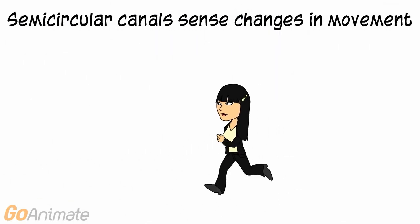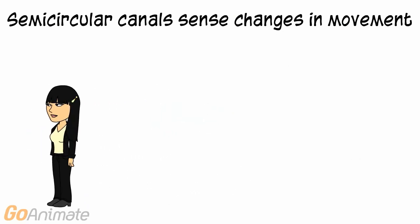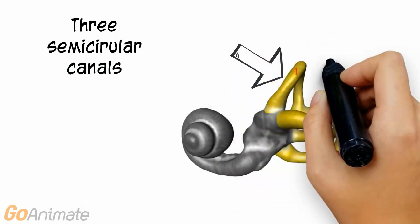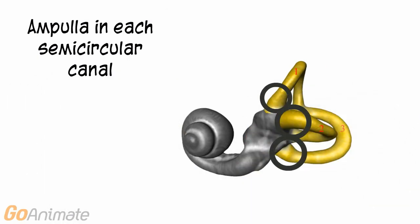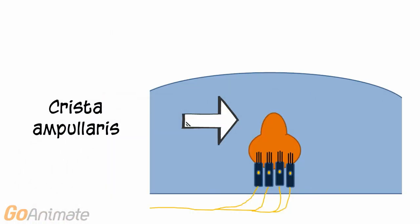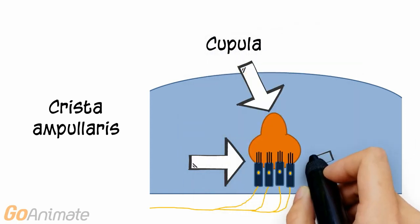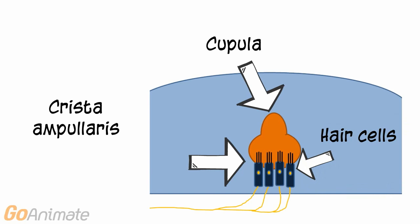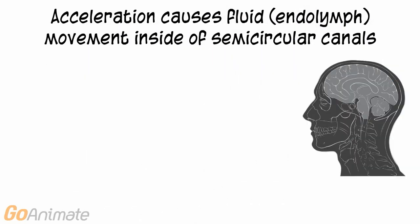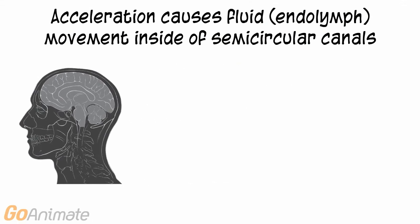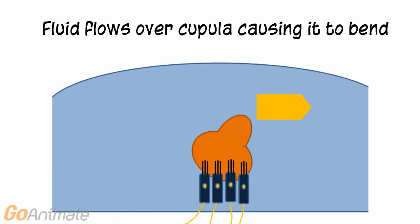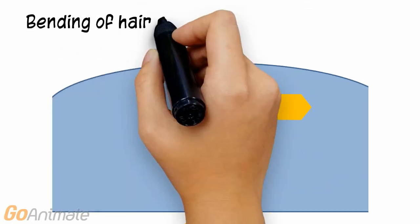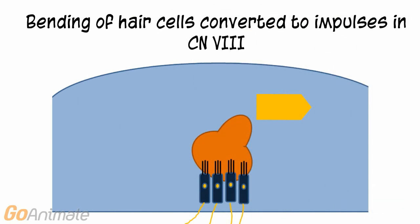The semicircular canals sense changes in movement. There are three semicircular canals, and each contains an area called the ampulla. Inside the ampulla is a structure called the crista ampullaris. The top portion of the crista ampullaris is called the cupula. Changes in motion or acceleration cause fluid called endolymph inside of the semicircular canals to move. The fluid flows over the cupula, causing it to bend. The stereocilia of the hair cells connected to the crista ampullaris also bend, and the cells transmit impulses to cranial nerve 8.